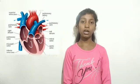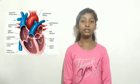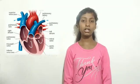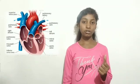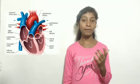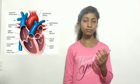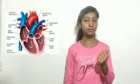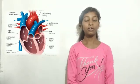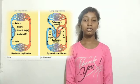Our heart has systole and diastole. When our heart contracts for pumping blood, we call it systole. When our heart relaxes for filling with blood, we call it diastole. Now let's go to circulation.